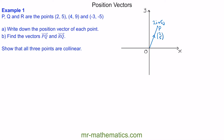For point Q (4, 9), we're going to go 4 in the i direction and 9 in the j direction. Again, we're going from the origin in this direction, and the column vector will be (4, 9), or 4i plus 9j. Each of these are position vectors for points P and Q.